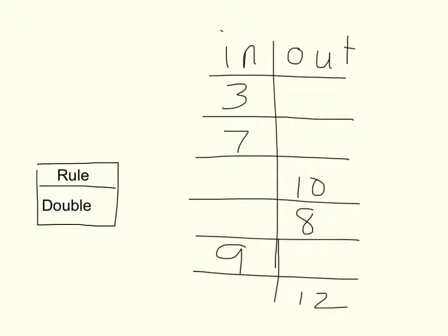All right, you must be ready to check your work. The rule for the inside is to double, so the rule for the outside numbers is to half because you're doing the opposite. 3 doubled is 6. 7 doubled is 14. 10 halved — 5 plus 5 is 10, so half of 10 is 5. 8 halved — 4 plus 4 is 8, so half of 8 is 4. 9 doubled is 18. And 12 halved — 6 plus 6 is 12, so half of 12 is 6. How did you do? Great work today!